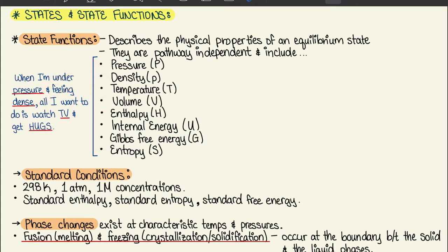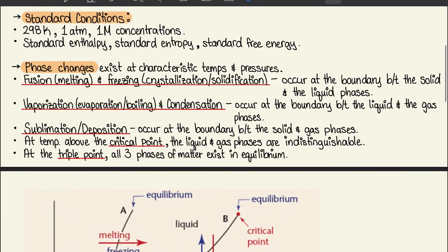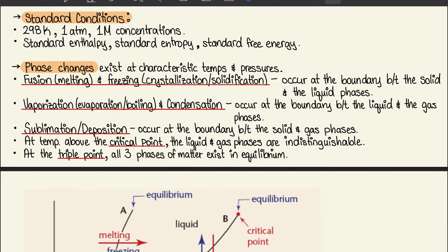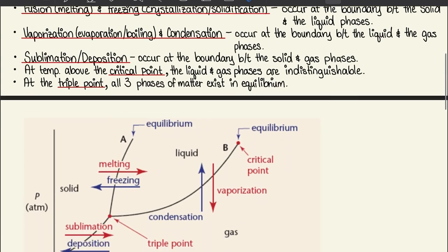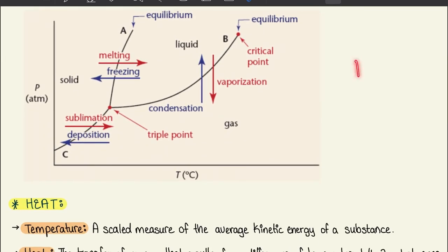For standard conditions we have 298 K, 1 atm pressure, and 1 M concentration, giving us standard enthalpy, standard entropy, and standard free energy. Phase changes exist at characteristic temperatures and pressures: fusion (melting) and freezing occur at the solid-liquid boundary; vaporization (boiling) and condensation occur at the liquid-gas boundary; sublimation and deposition occur at the solid-gas boundary. Above the critical point, liquid and gas are indistinguishable, and at the triple point all three phases coexist. Pause the video to examine the phase diagram.